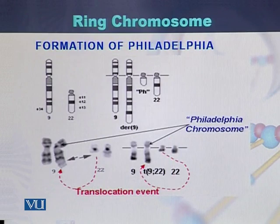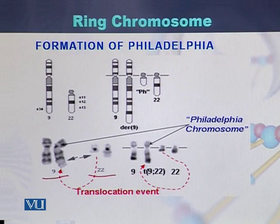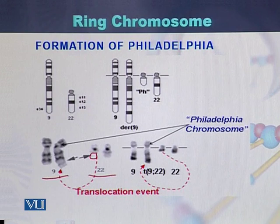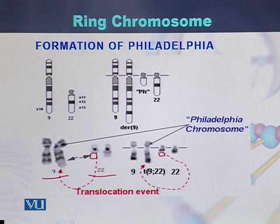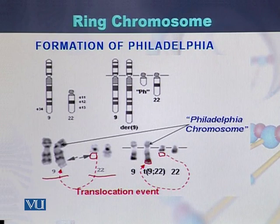In the formation of the Philadelphia chromosome, two chromosomes are involved: chromosome 22 and chromosome 9. A small fragment present at the tip of chromosome 22 is deleted and attached to the telomere of chromosome 9. In this diagram, we can see this fragment has been deleted and attached at the telomere of chromosome 9.